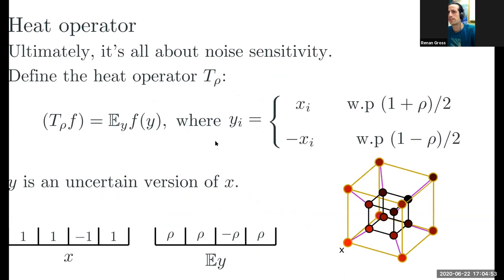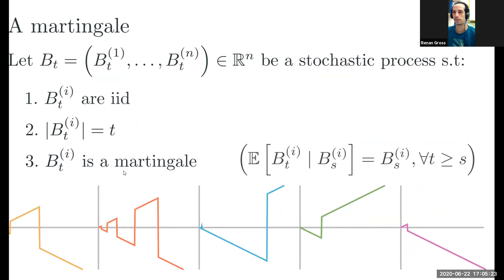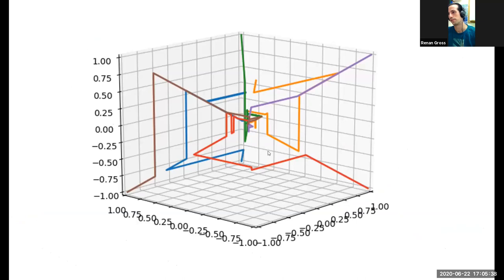Regarding proof techniques: usually these inequalities are proved using a heat operator — you apply a small noising effect by flipping individual bits, then use the hypercontractive inequality. Our approach is similar in using Fourier analysis and randomness, but we go the other way: we start with a stochastic process that has zero randomness and slowly progresses forward. We plug this martingale into our function and do analysis. The whole proof relies on continuous time and stopping times. I'm now open to questions.